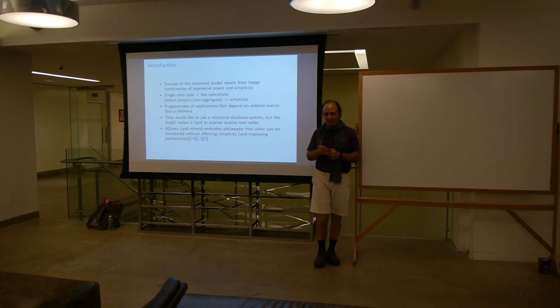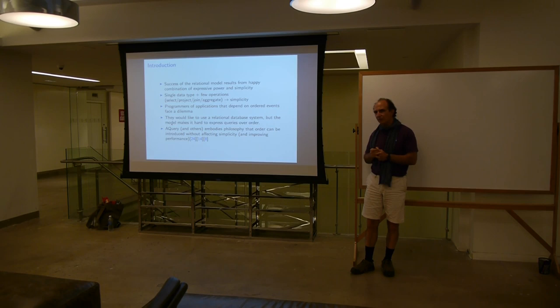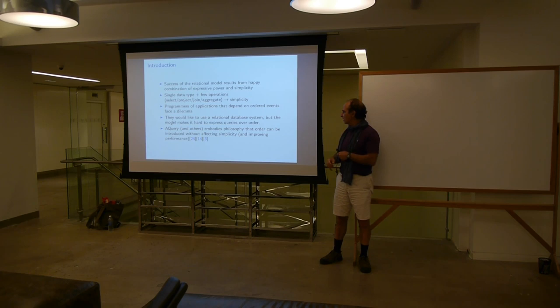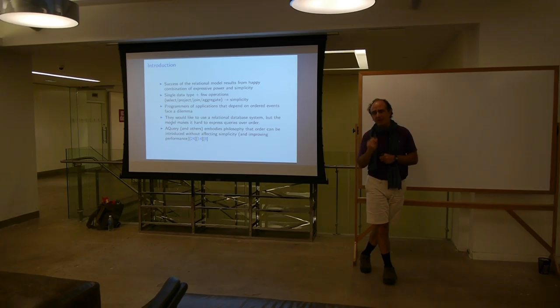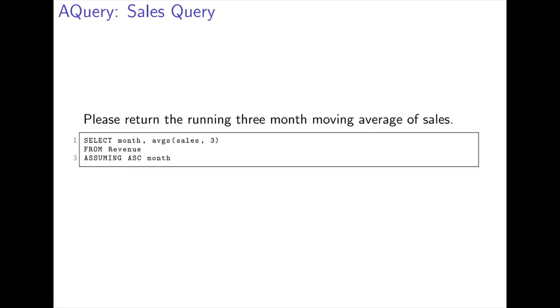But sometimes you might depend on ordered events. Typically in finance, of course, you depend a lot on ordered events — time series of prices, time series of returns, time series of bankruptcies, whatever. So you'd like to use a relational system, but the model makes it hard to express those queries. There have been a bunch of systems that have tried to extend relational models for this. But I'm going to present to you a very simple one that's built on top of K and KDB, but really cute.